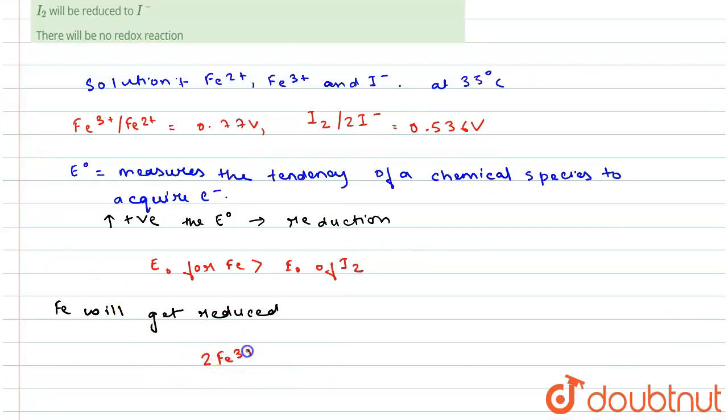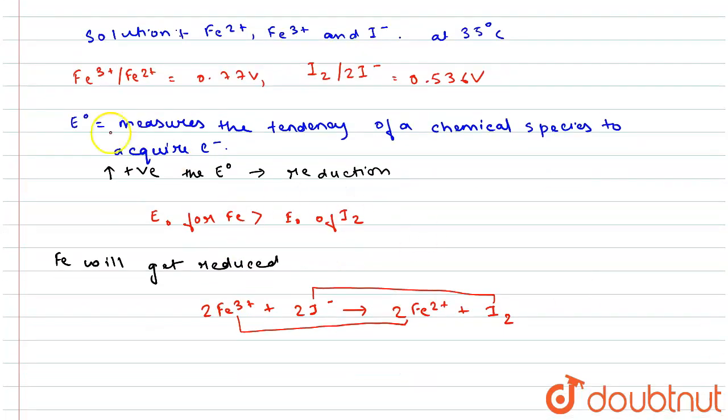2Fe3+ + 2e- gives 2Fe2+ plus I2. Here you can see that Fe3+ is being reduced to Fe2+ as it has higher reduction potential value than I2 to I-. I- is getting oxidized to I2, so this is the correct answer.